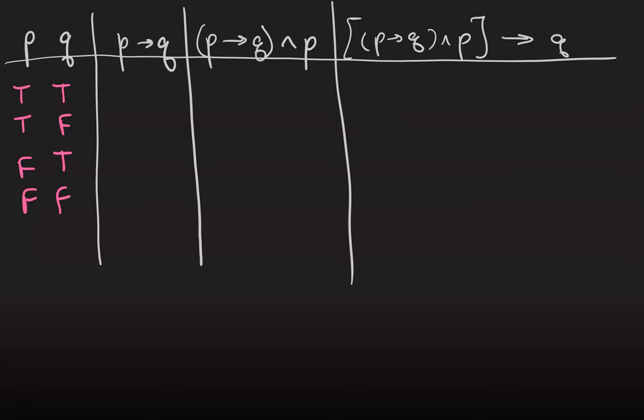Remember that the conditional statement if p then q is true as long as p isn't true while q is false. So the truth table for that is true, false, true, true.